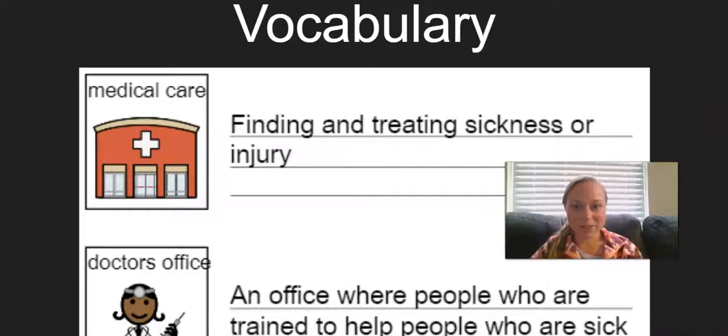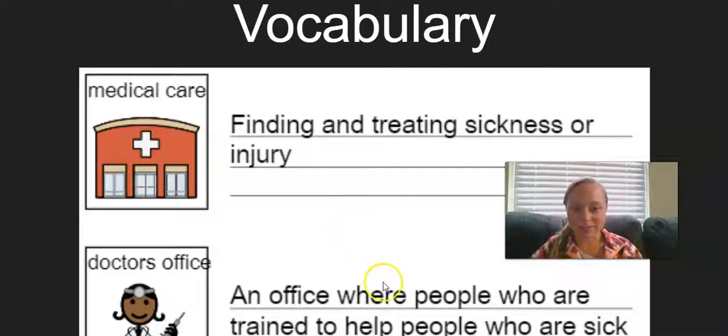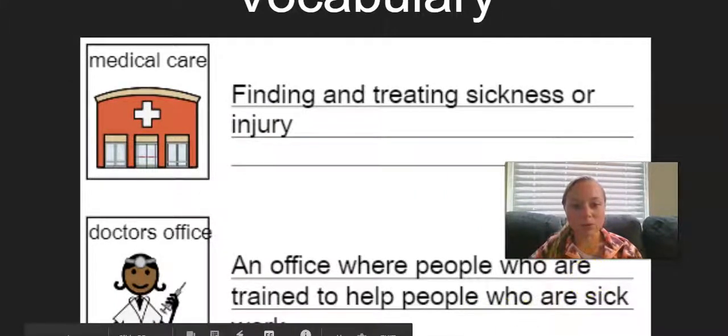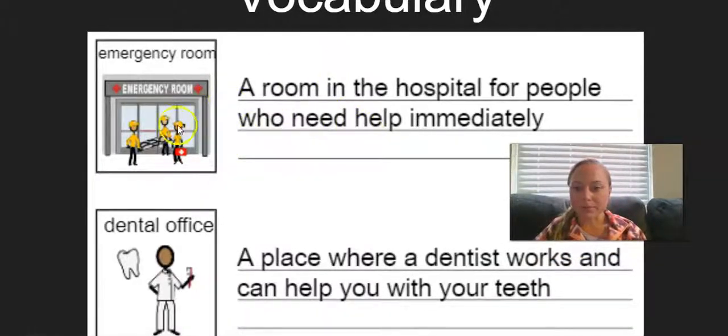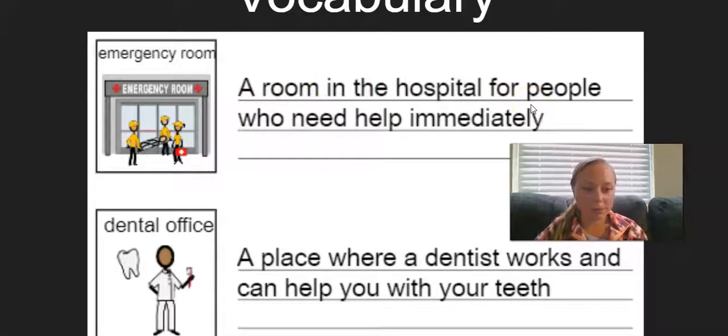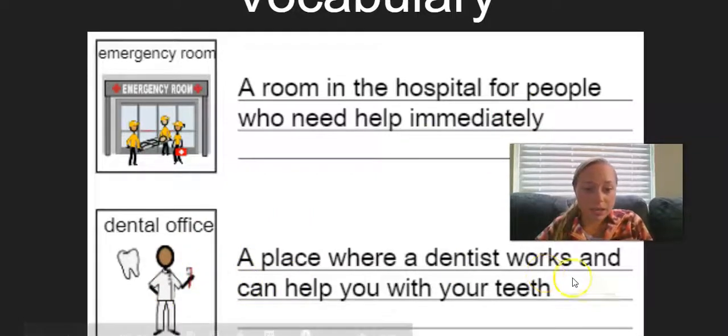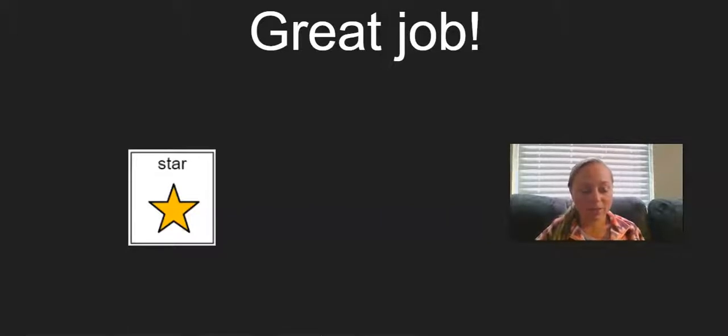Great, now let's review your vocabulary. Medical care, this is finding and treating sickness or injury. Doctor's office, this is an office where people who are trained to help people who are sick work. Emergency room, this is a room in the hospital for people who need help immediately. Dental office, this is a place where a dentist works and can help you with your teeth. Great job, you guys reviewed your vocabulary and you have earned one star.